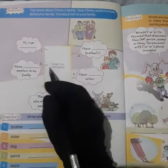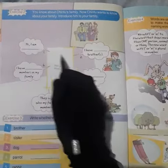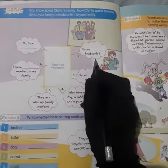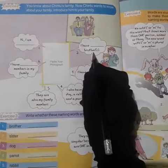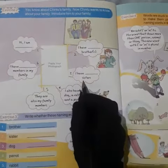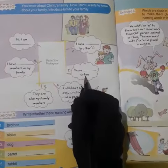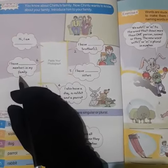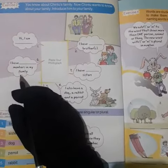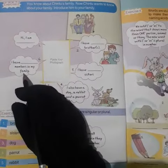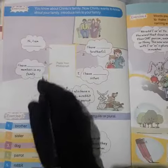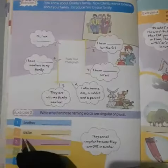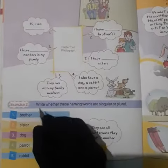Write down your name, write down how many brothers you have, how many sisters you have, and how many family members you have in your family. Do this exercise by yourself. Now, exercise number three.